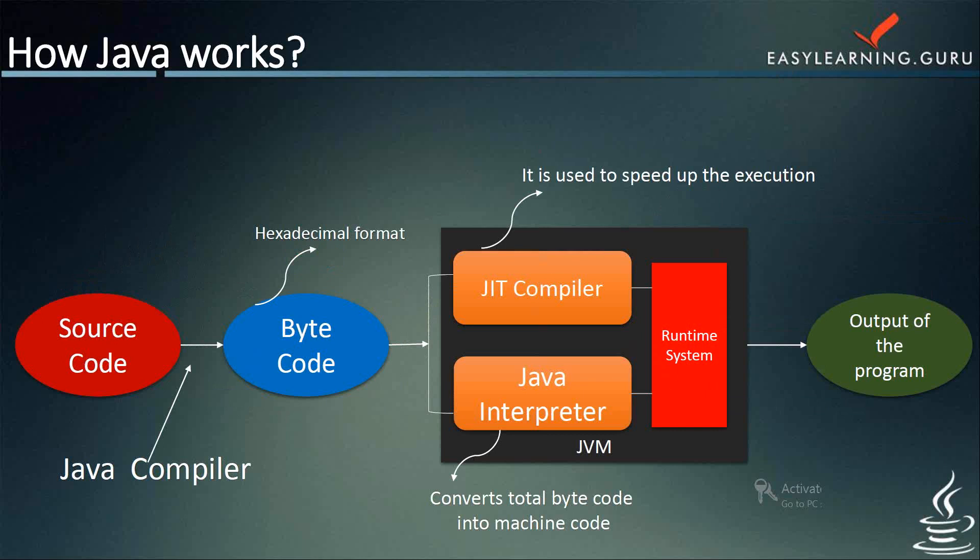A program written in the Java programming language is first translated into Java intermediate language — this is called compiling, and it is done by software called a compiler. The program is then executed on the Java Virtual Machine, which interprets the intermediate language on some target computer. By preparing a JVM for each platform, a program translated into the intermediate language can run on many different computers. Java source code files are compiled into a format called bytecode, which can be executed by the Java interpreter. Compiled Java code can run on most computers because Java interpreters and runtime environments — known as JVMs — exist for most operating systems including Unix, Mac, and Windows.